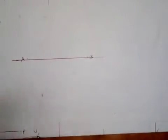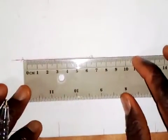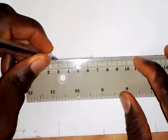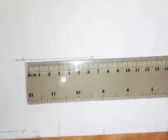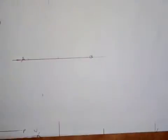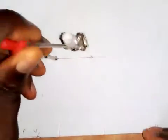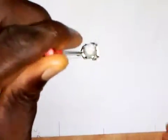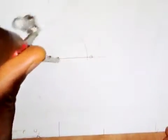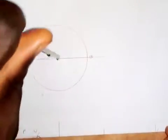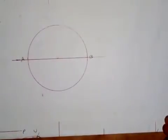The next thing I'm going to do is locate the midpoint of the line, which is 30 millimeters away from either A or B. So I put the pin point of my compass at point A, extend it to point B, then I will draw a circle like this.